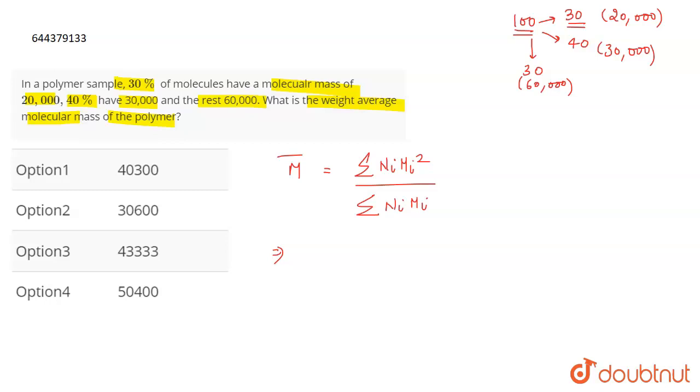So we just have to put the values in the formula. We have 30 molecules with molecular mass of 20,000 squared, plus 40 molecules having mass of 30,000 squared, plus 30 into 60,000 squared.